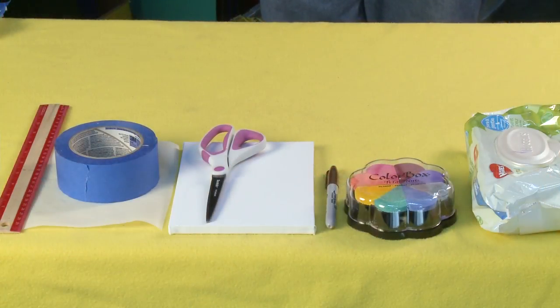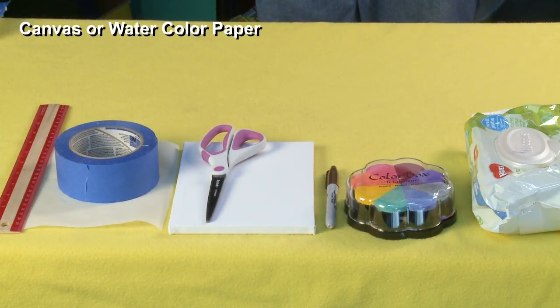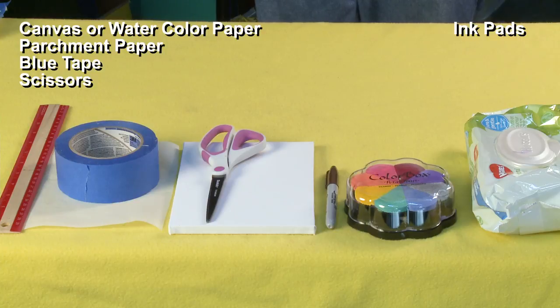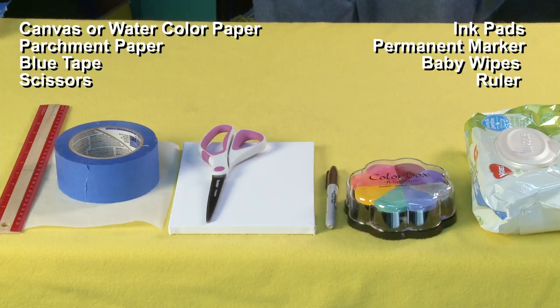For this project you'll need a canvas or watercolor paper, parchment paper, blue tape, scissors, ink pads in different colors, a Sharpie pen, baby wipes, and a ruler.